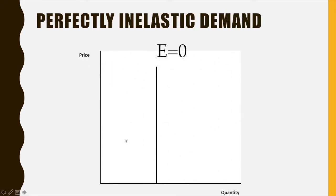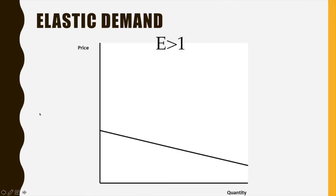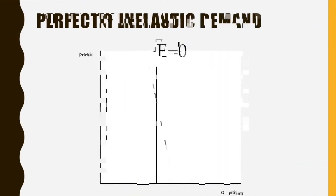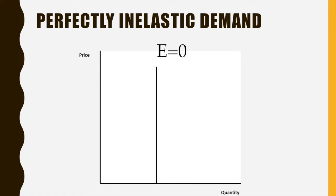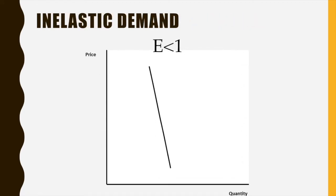If you get an elasticity equal to zero, the curve is straight up and down — regardless of what happens to price, the quantity demanded doesn't change. This is called perfectly inelastic demand. If you get a value greater than zero but less than one, the change in price is significantly bigger than the change in quantity demanded — big changes in price create small changes in quantity. This is said to be inelastic: goods that consumers will keep buying regardless of price.